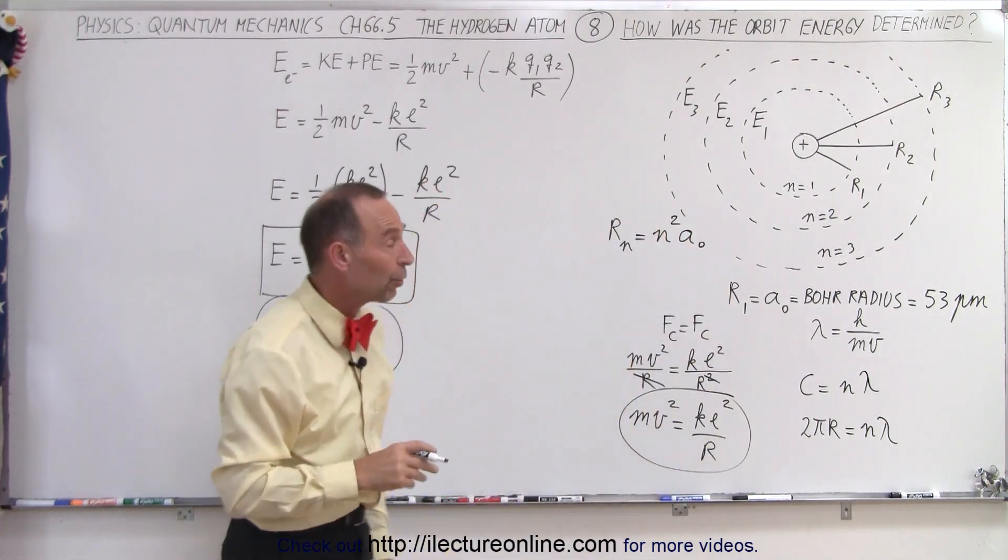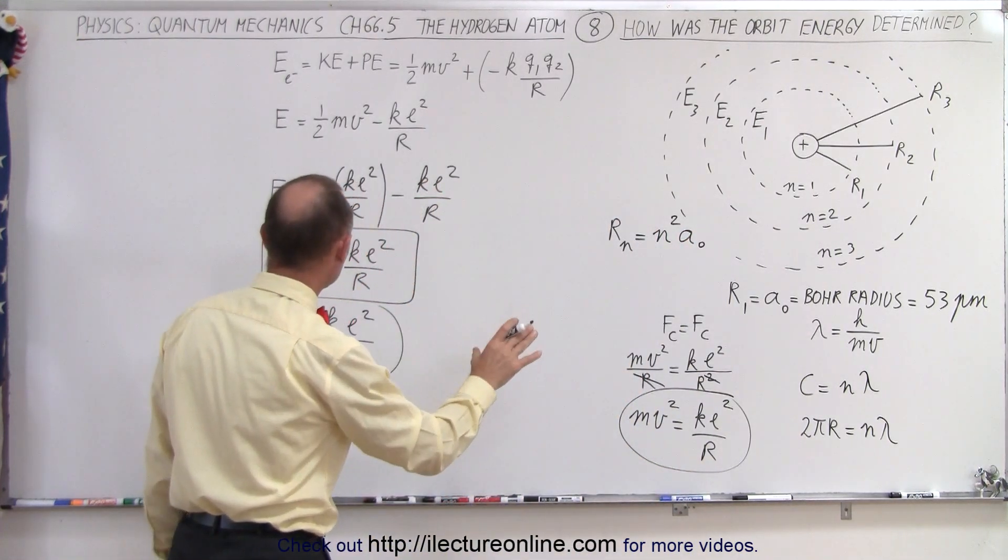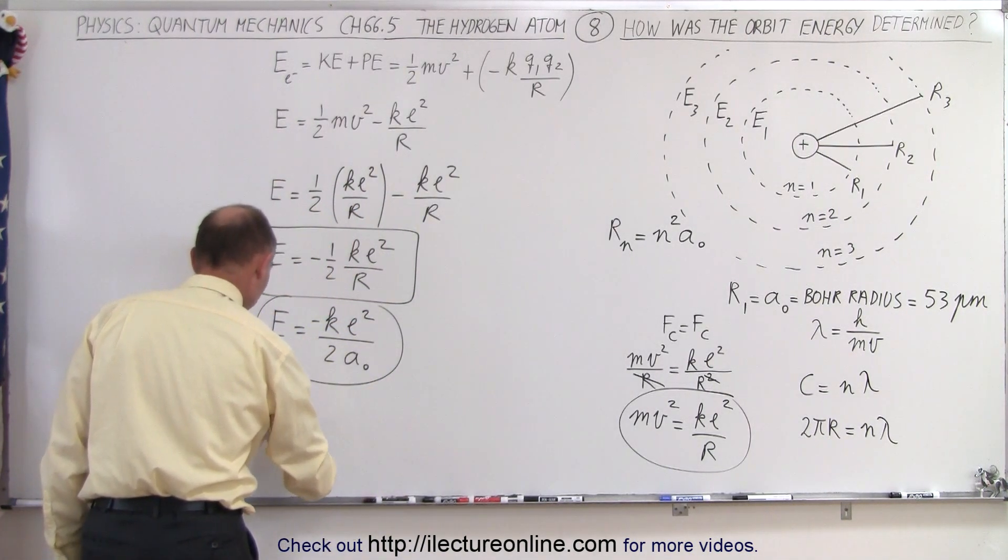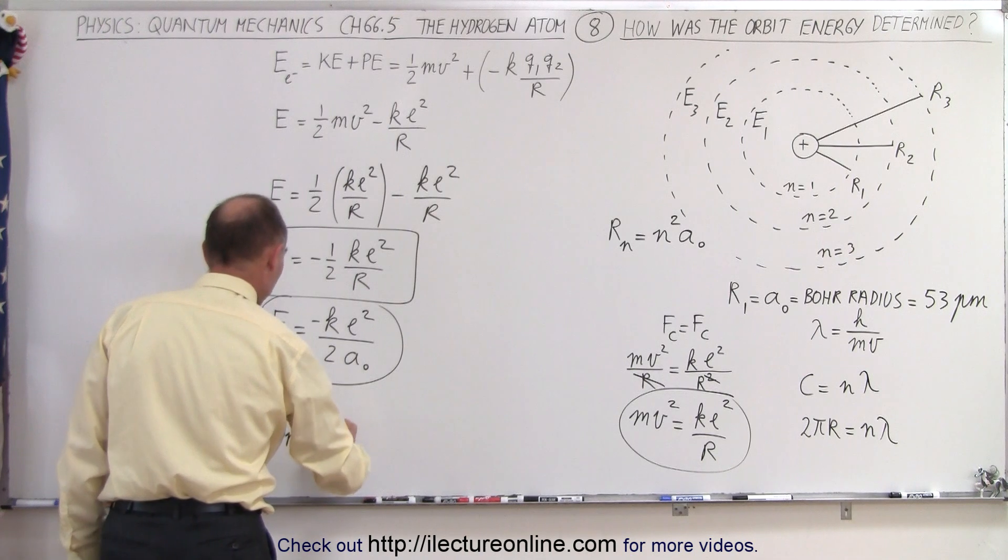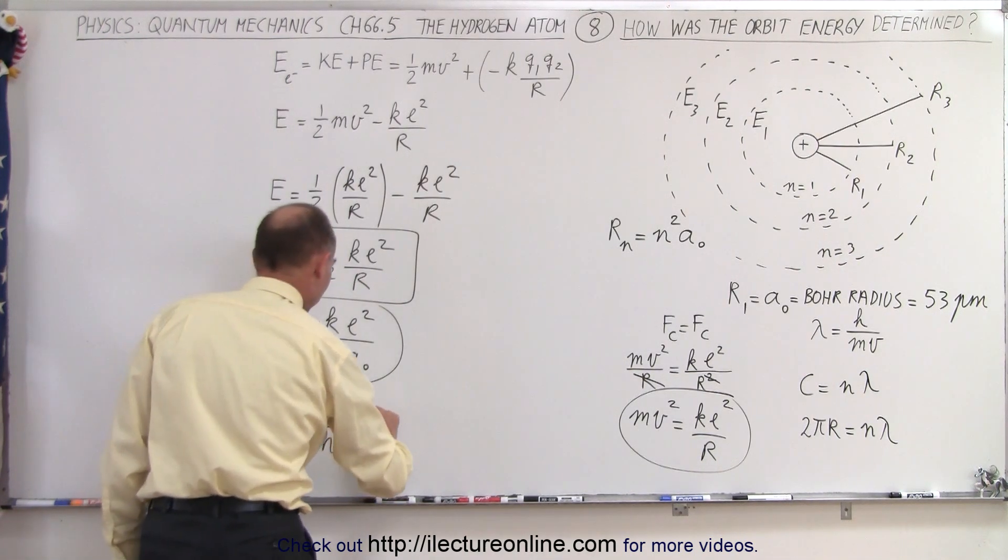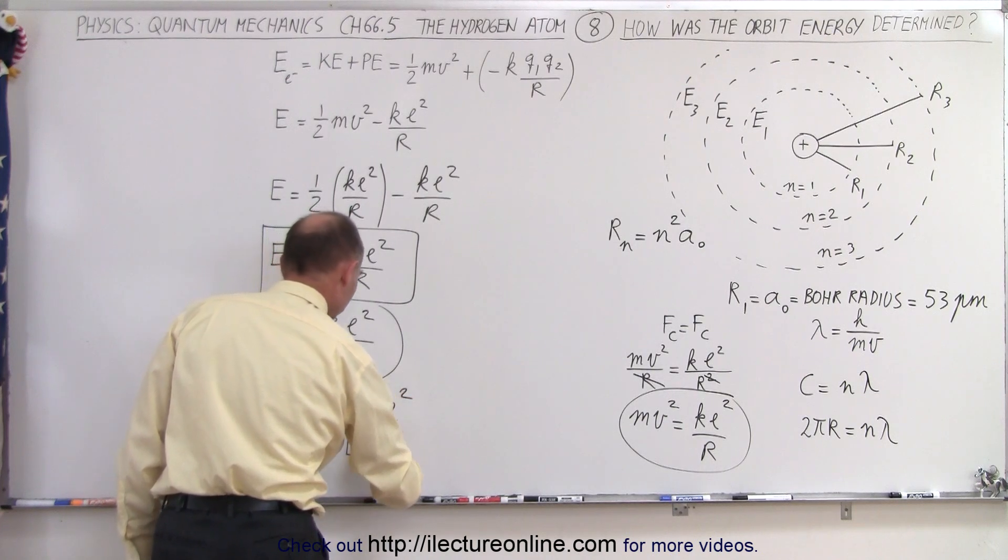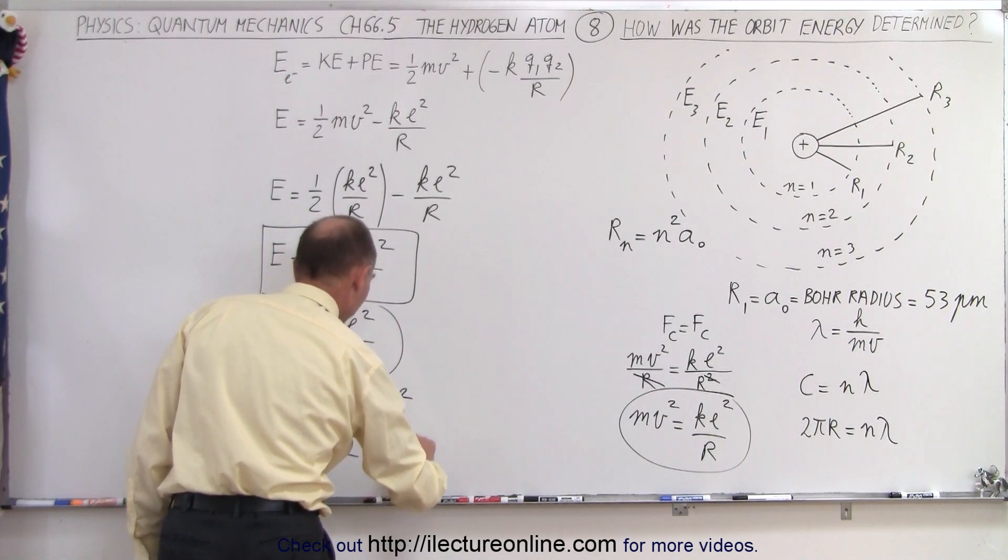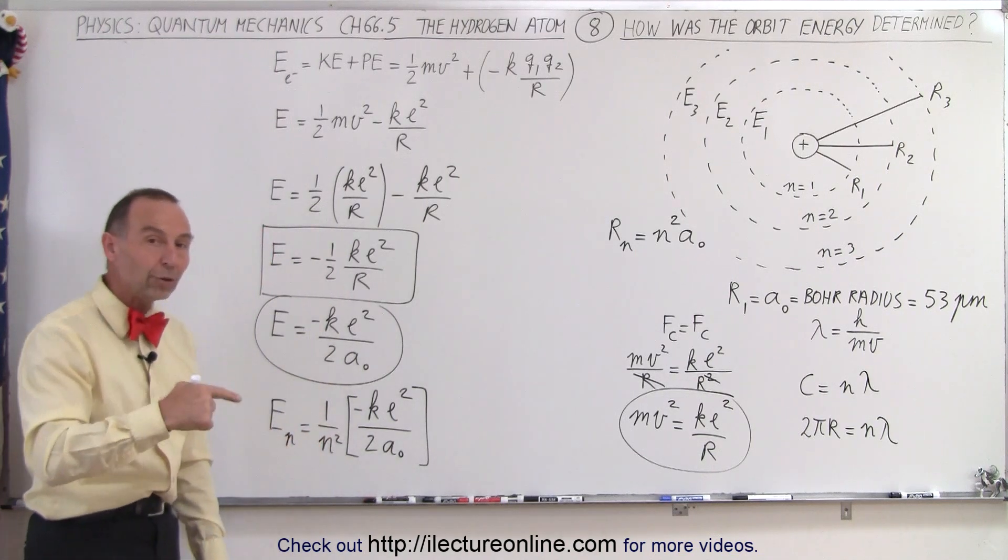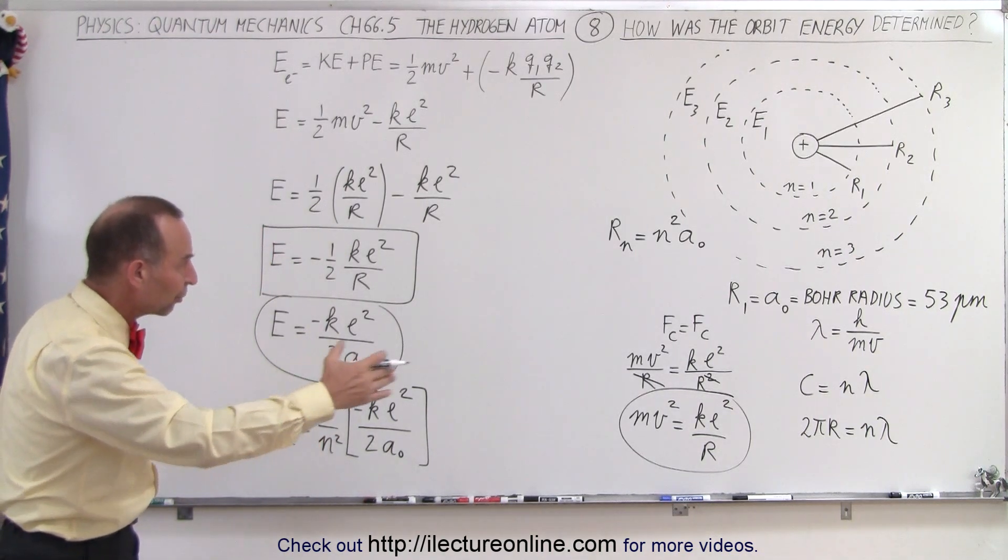And so we saw that in the previous video where that came from. So that means that this can then be written in terms of the energy at any level n is going to be equal to 1 over n² times minus ke² divided by 2a₀. And you can see then that the energy drops off as 1 over n² as we go orbits further out.